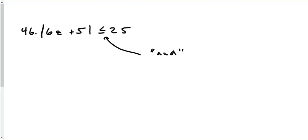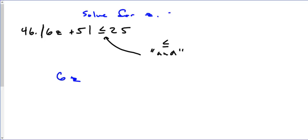The AND statement occurs whenever you have the absolute value which is less than, or less than or equal to, that value. If you can't keep straight the AND or OR statements, just remember: create two different equations from the absolute value. In this case we're going to solve for z and then graph it.